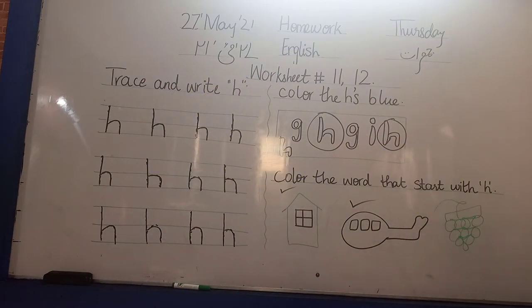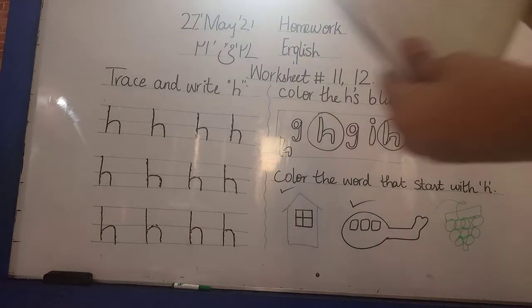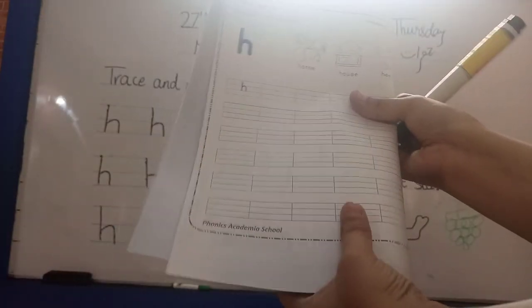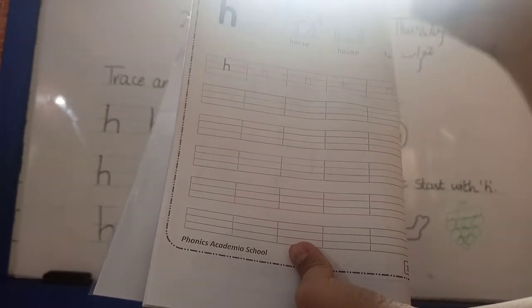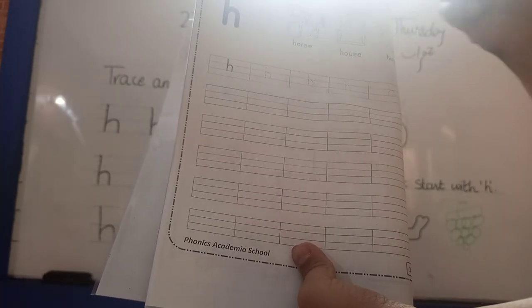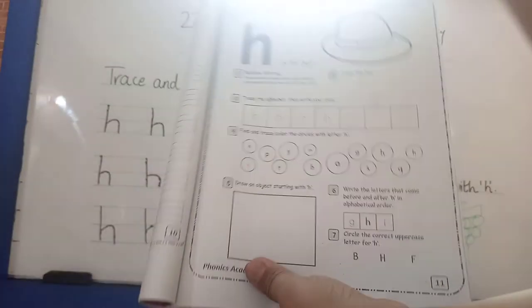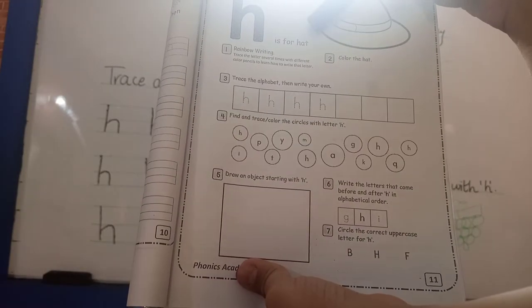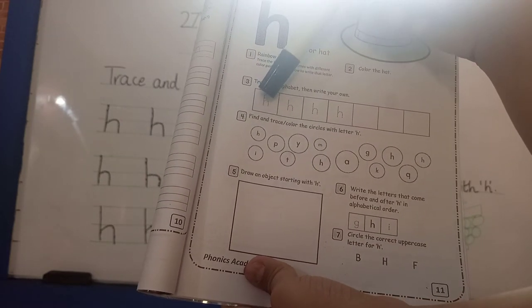Now everyone take out your booklet. See, trace, write and color letter H. H is a horse, H is a house, H is a hen. H is for hat. Trace the alphabet then write your own. Everyone write the letter H — trace and write letter H.